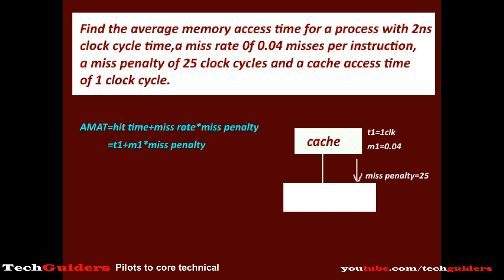That is T1 plus M1 times miss penalty. Substituting, we get 2 clock cycles, and since each clock cycle is 2ns, the average memory access time is 4ns.